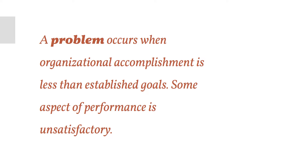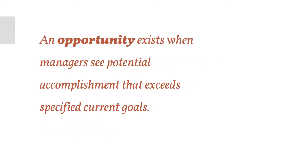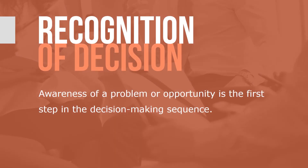A problem occurs when an organizational accomplishment is less than established goals — some aspect of performance is unsatisfactory. An opportunity exists when managers see potential accomplishment that exceeds specified current goals, seeing the possibility of enhancing performance beyond current levels. Awareness of a problem or opportunity is the first step in the decision-making sequence, requiring surveillance of the internal and external environment for issues that merit executive attention.